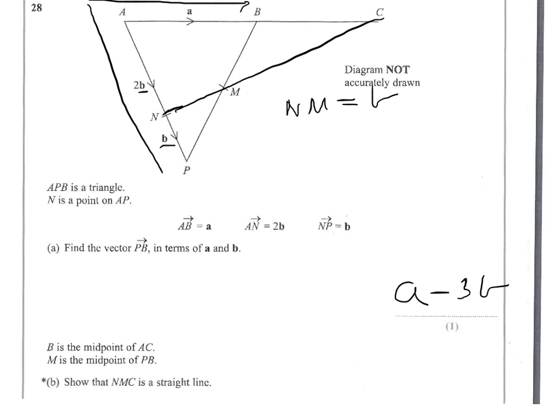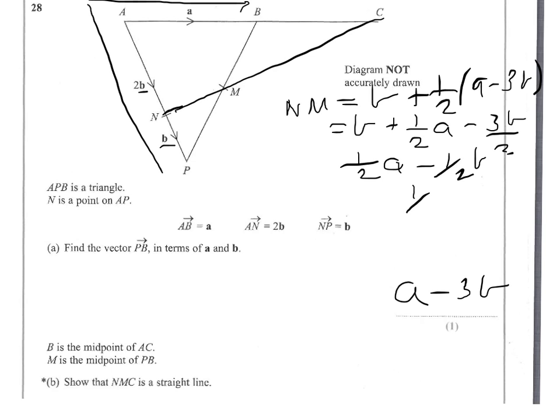So NM will be b. I come from the N down to the P and then back up to the M. So b plus a half of what we've just found, a half of a minus 3b. So we'll expand the brackets: b plus a half of a minus 3b over 2. That will simplify to a half a. b minus 3b over 2 is going to give me minus a half b. And then if we take the half out as a common factor, we have a half of a minus b.